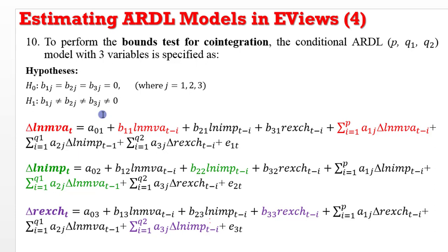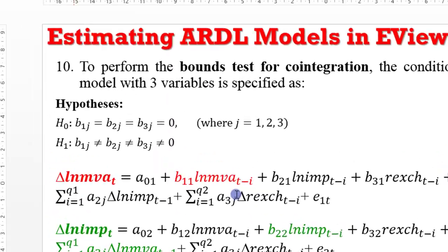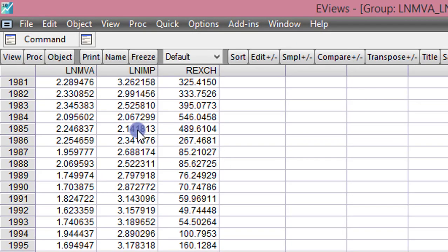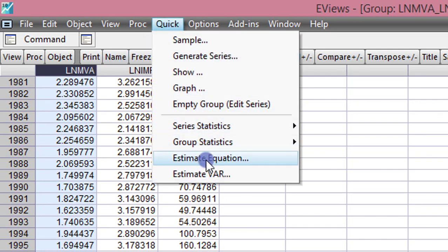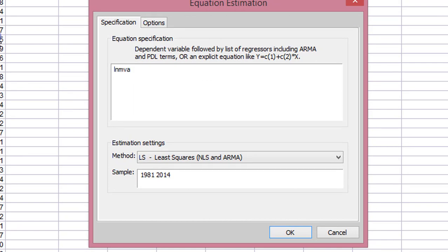I'm going to take each variable in that model to be a dependent variable and test for cointegration. The first test will be when the log of MVA — manufacturing value added — is the dependent variable. The next test will be when the log of imports (LN IMP) is the dependent variable. The third test will be when the real exchange rate is the dependent variable. These are variables from 1981 to 2014, so I have 34 years of data.